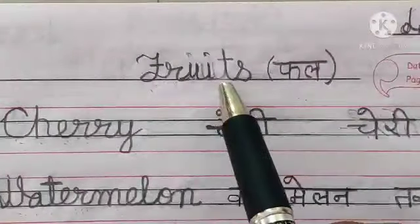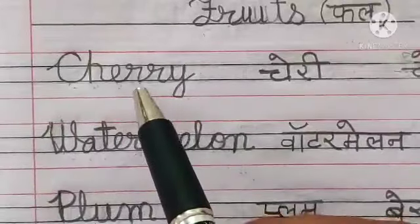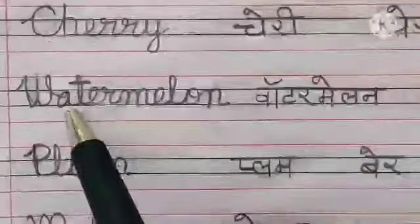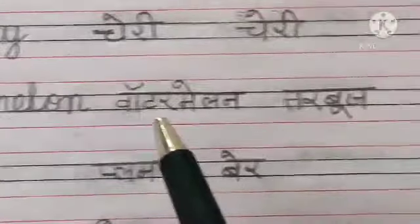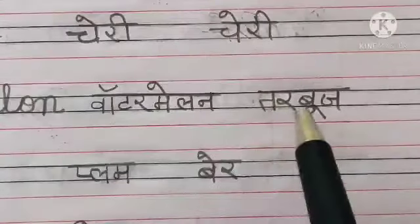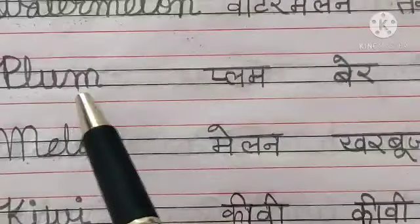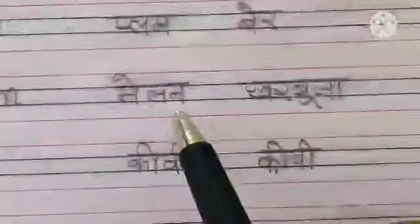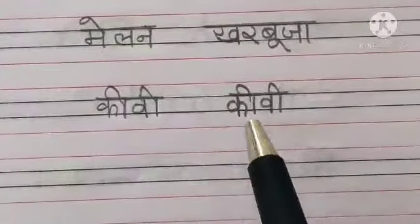Lesson 7 - Fruits: Cherry, Watermelon means तरबूज, Plum means बेर, Melon means खरबूजा, Kiwi. Lesson 8 - Vegetables: Tomato, Garlic means लहसुन, Ginger means अदरक, Spinach means पालक, Bitter Gourd means करेला, Mushroom, Sweet Potato means शकरकंद, Bottle Gourd means लौकी.